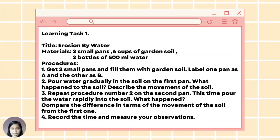For our first learning task, our activity that you are going to perform will clearly explain weathering through communicating the data collected from the investigation of soil erosion. You need to prepare the following materials: two small pans, six cups of garden soil, two bottles of 500 ml water. Procedures: Get two small pans and fill them with garden soil. Label one pan as A and the other as B. Pour water gradually in the soil on the first pan and observe what happened to the soil. Describe the movement of the soil. Number three: Repeat procedure number two on the second pan, then this time pour the water rapidly into the soil. What happened? Compare the difference in terms of the movement of the soil from the first one and record the time and measure your observations.